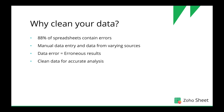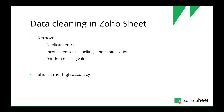So how do you eliminate these errors? There are two methods — manual and automated. When it comes to manual data cleaning, it is time-consuming and not accurate because you can miss errors. To avoid that, we introduced an automated data cleaning tool in Zoho Sheet. This tool helps you find and remove duplicate entries, inconsistencies in spellings and capitalization, and missing values — all in a short period of time with high accuracy. Now let's jump into the demonstration.